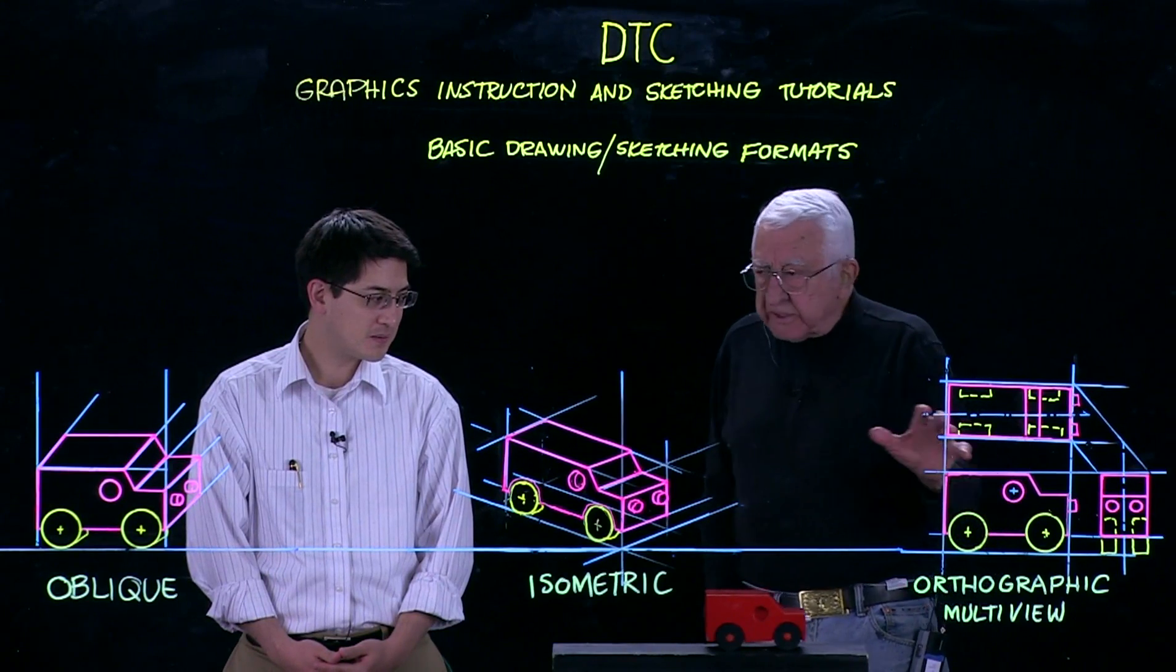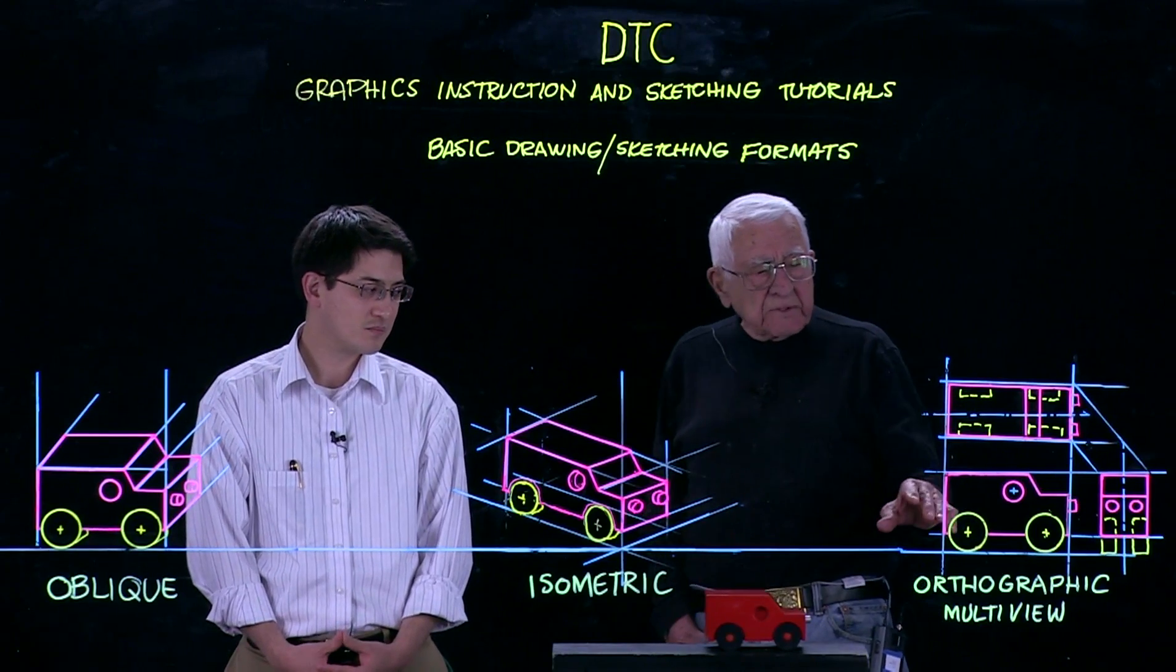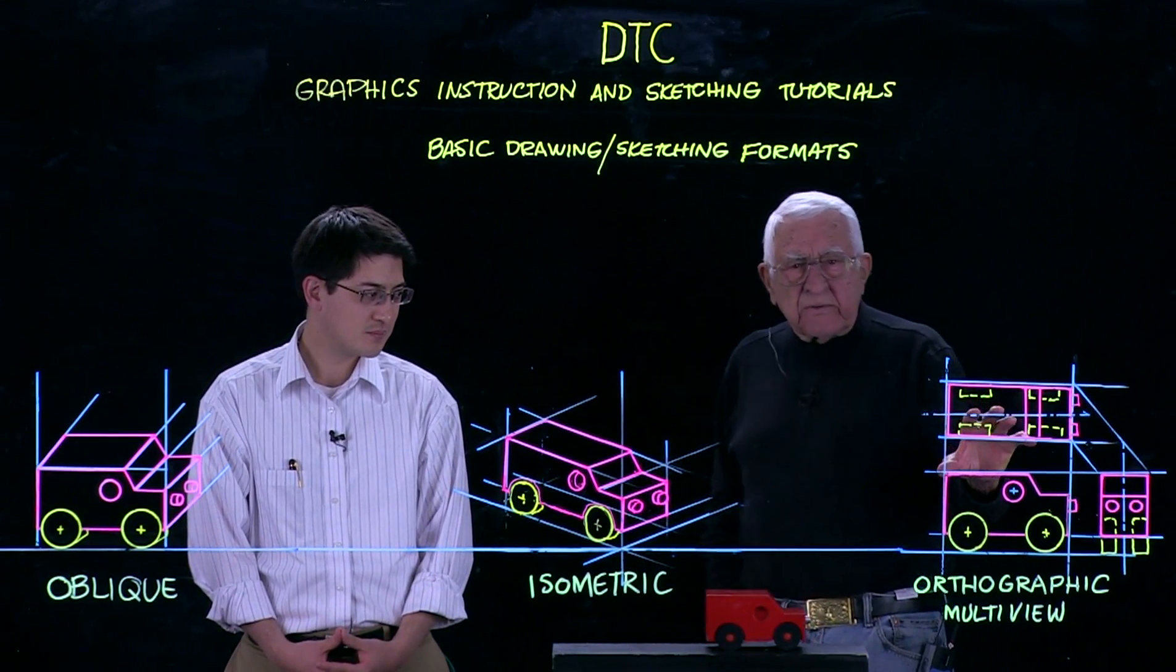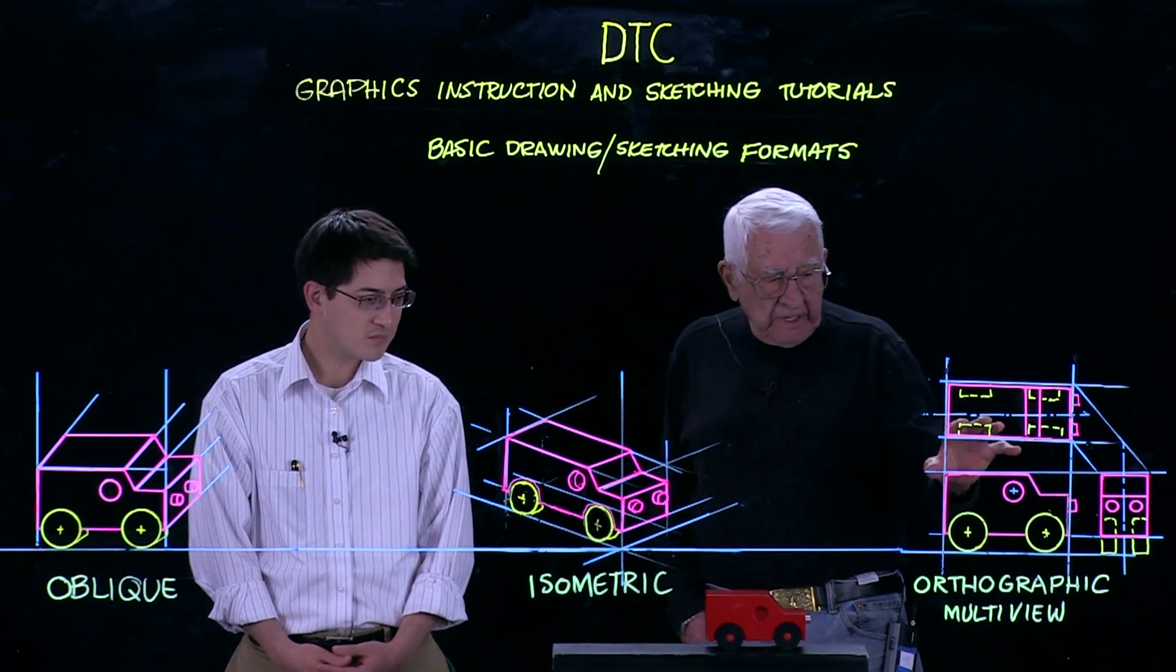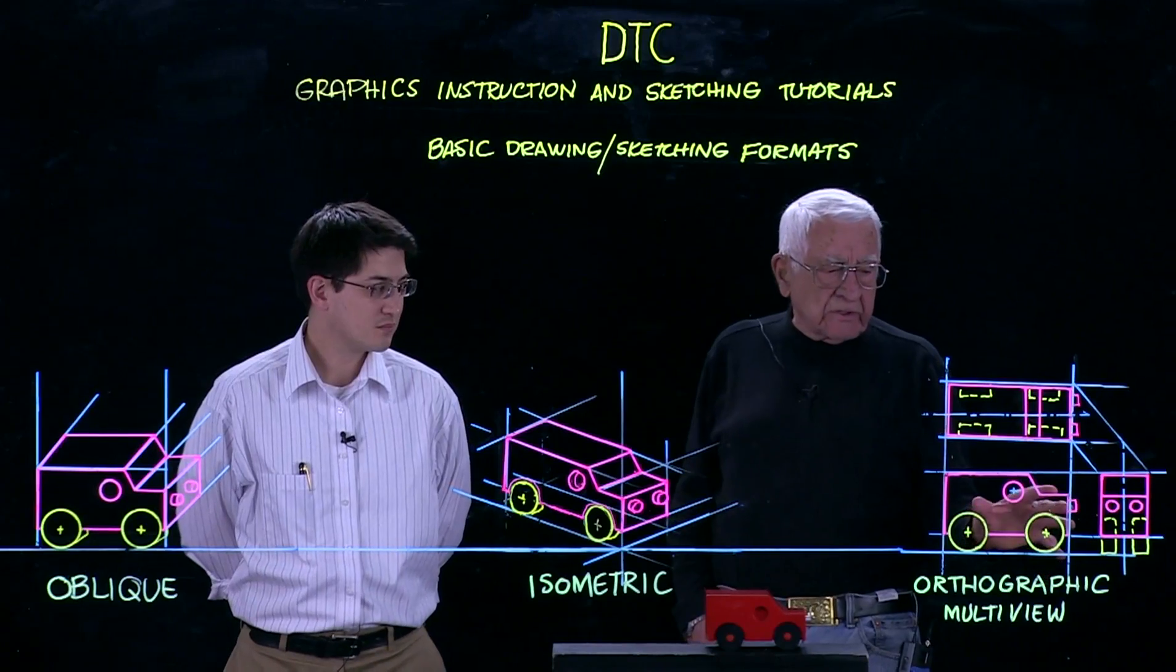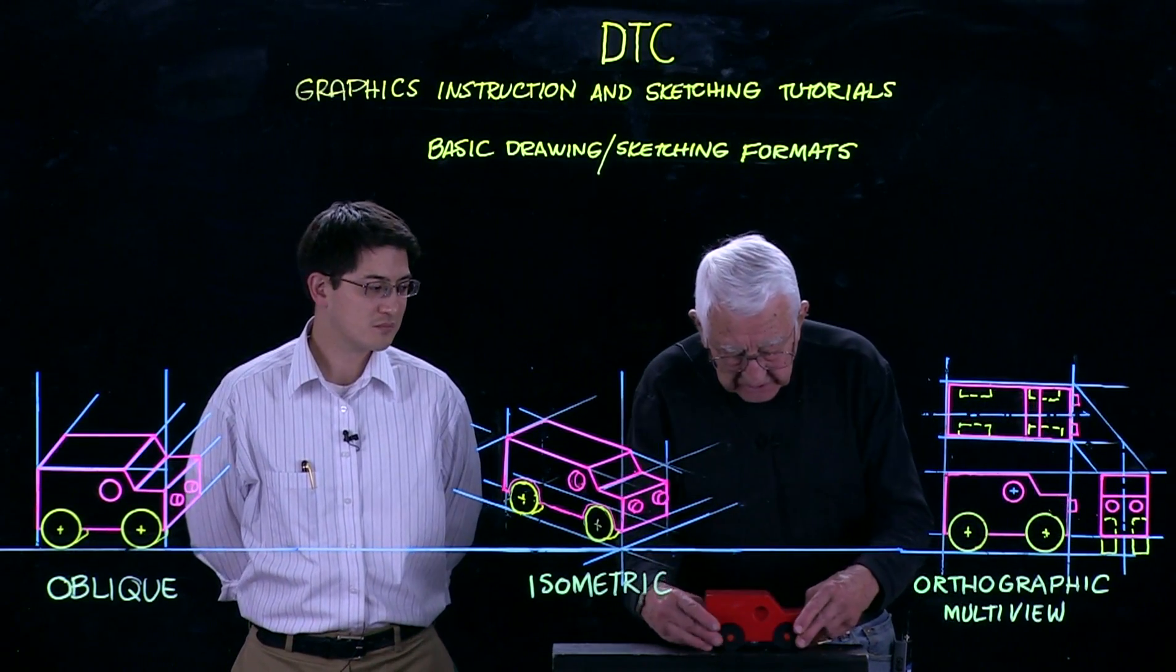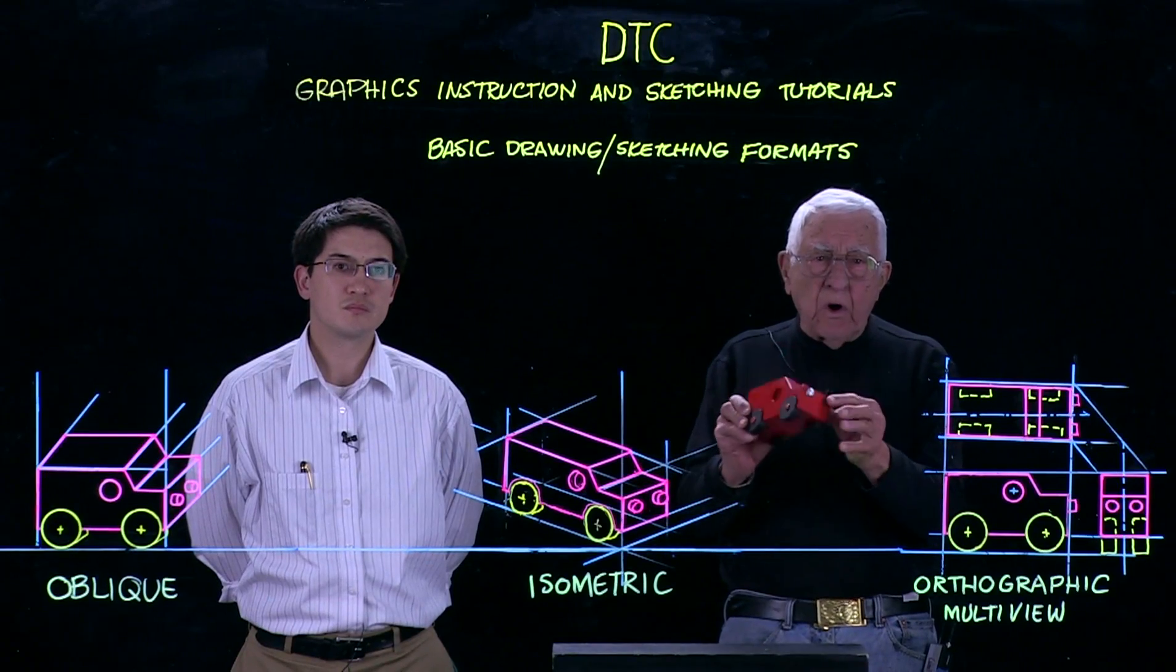First, let me say these all have a history to them. We're not going to go into that except to say orthographic multi-view is perhaps the oldest of all of them. It's a means by which you can show on a two-dimensional surface, a three-dimensional object, say in this case a small wooden truck.